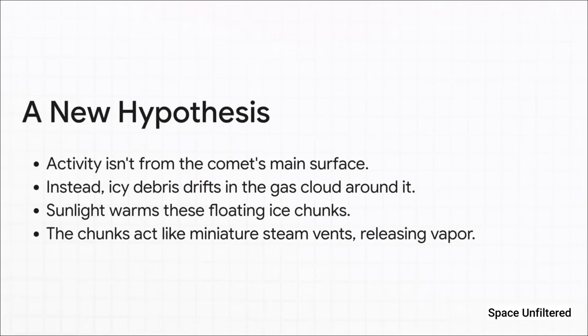This puzzle has led to a fascinating new idea. What if all that activity isn't coming from the comet's main surface at all? The theory goes like this: maybe chunks of ice are breaking off and just drifting around in that fuzzy gas cloud, the coma, that surrounds the comet. Then sunlight can warm up these smaller floating pieces of ice, causing them to act like a bunch of tiny steam vents releasing water vapor, even while the main body of the comet stays mostly frozen.